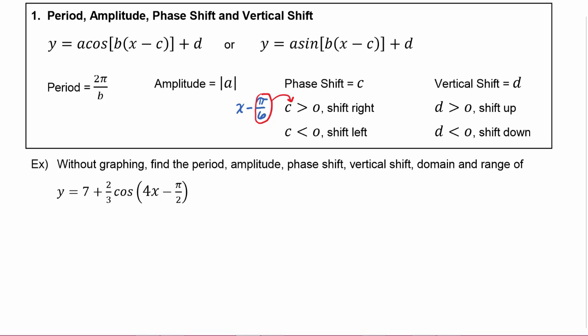Now if instead you had something that looks like x plus π over 3, that really is x minus a negative π over 3, so then that means what's coming after the minus sign is a negative, so that would be a shift to the left.